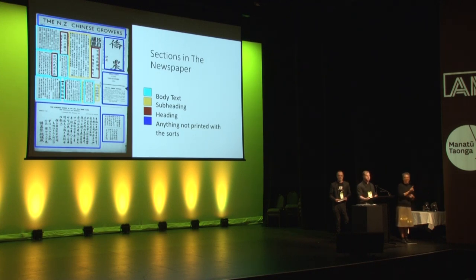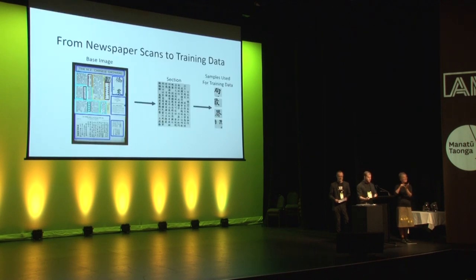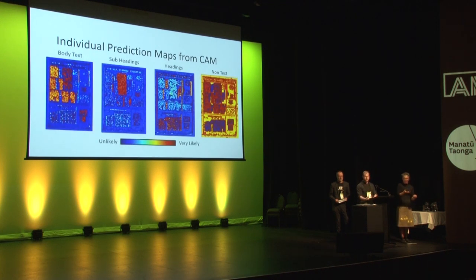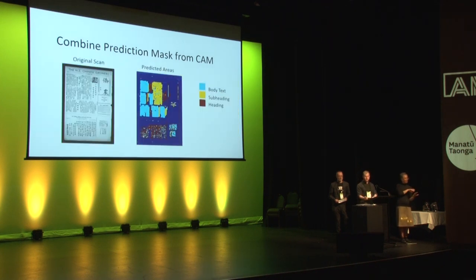We tried some pre-built solutions like Google's Tesseract layout analysis component and OCR Opus, but these had very poor accuracy. The approach we finally settled on was a deep convolutional network based on the GoogleNet architecture. This was trained to classify which section of the newspaper small samples were from. We could then run class activation mapping across the output from an entire page to get an idea of where the different sections of the newspaper were. Then these combine to look something like that.